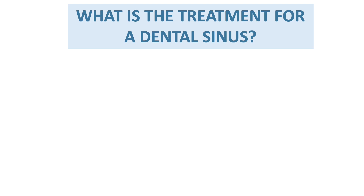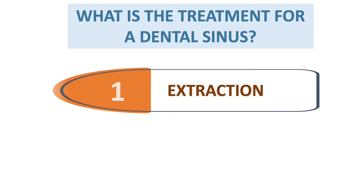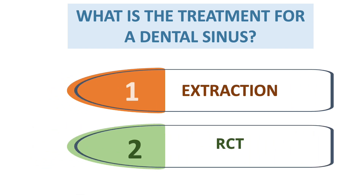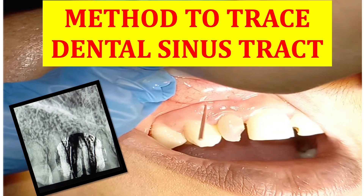Now, what is the treatment option for a dental sinus? If there is tract formation in chronic decayed dentition, we have two main options: first is extraction, and second is root canal treatment. We can also start antibiotics like penicillin or metronidazole. After extraction, it will take one to two weeks to heal.